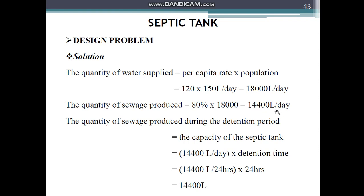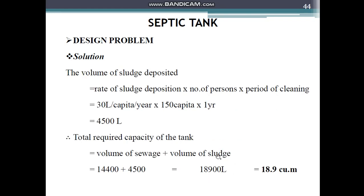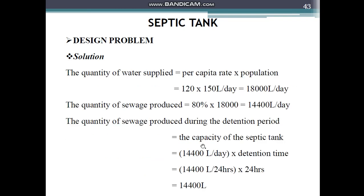Next, we calculate the quantity of sewage produced during the detention period. We know 14,400 liters per day is generated, but we need the sewage collected during the detention period. Since detention time is 24 hours, sewage collected = 14,400 liters per day × 1 day (24 hours) = 14,400 liters. This is the amount of sewage collected in the septic tank during the detention period.